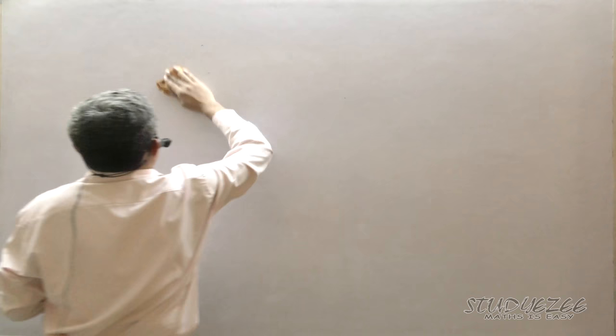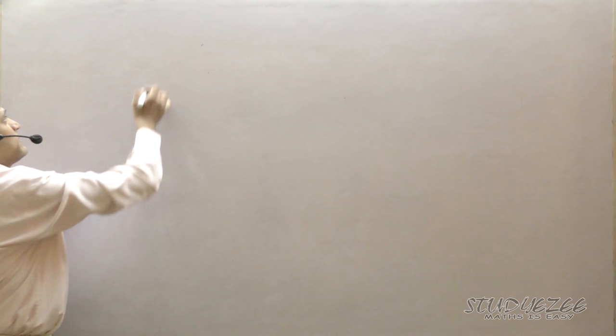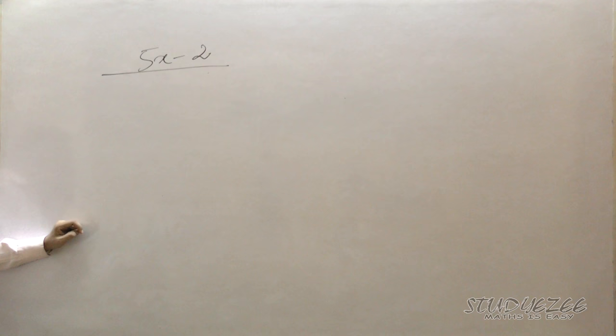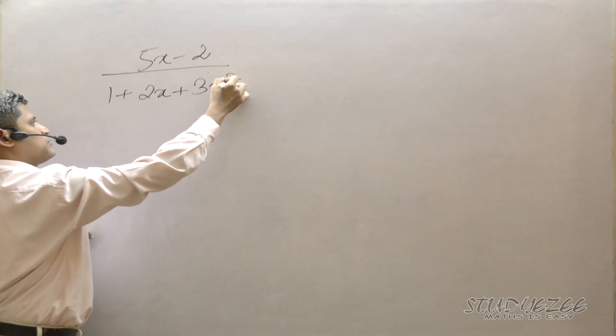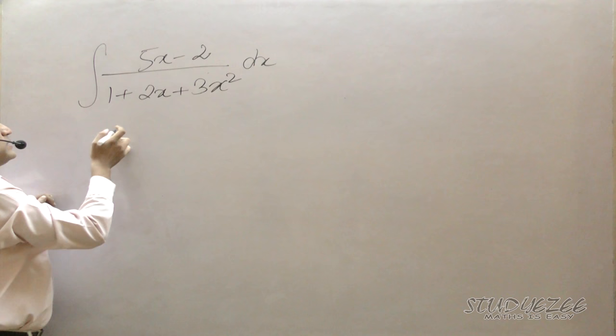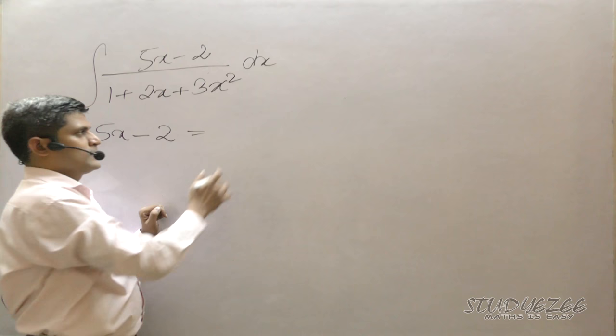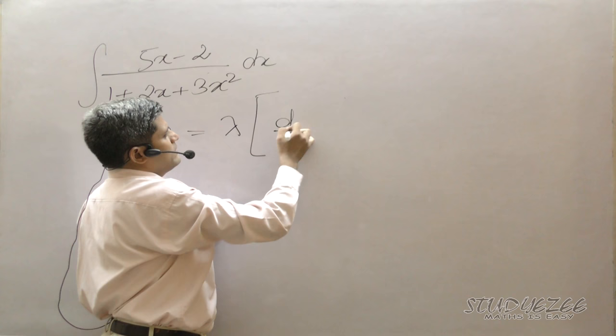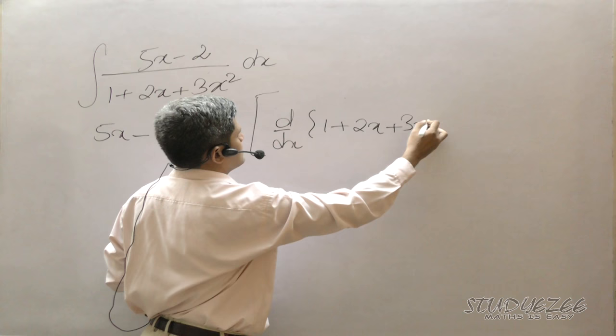Now let's take an example: integrate (5x − 2) / (1 + 2x + 3x²) dx. Here, 5x − 2 is the linear equation and 1 + 2x + 3x² is the quadratic equation. In the first step, I write 5x − 2 = λ · d/dx(1 + 2x + 3x²) + μ.